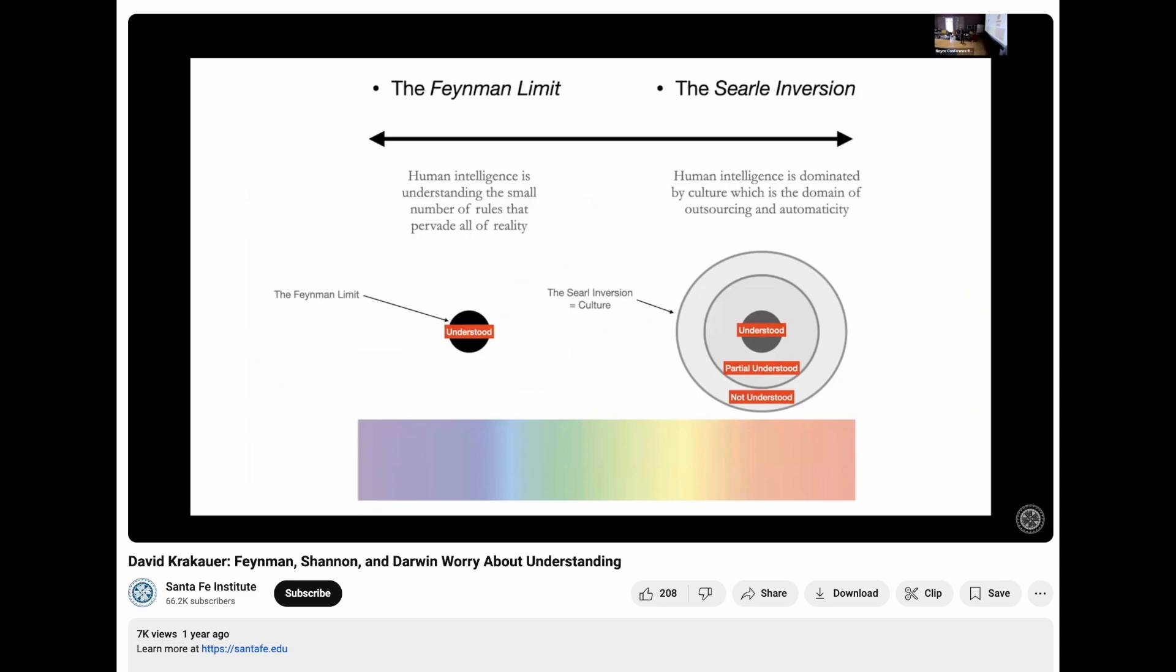There's a kind of understanding I call the Feynman limit. People seem to find beautifully aesthetic, highly compressed representations of universal regularities that appear in multiple different phenomena. We've also done this thing about outsourcing and a sort of generalized automaticity where we put solutions out into the world, into culture,